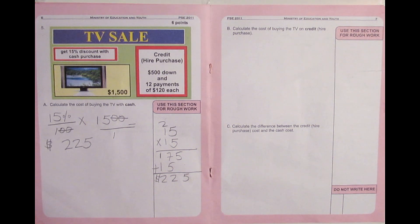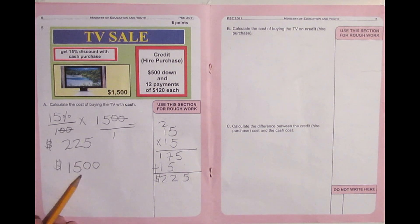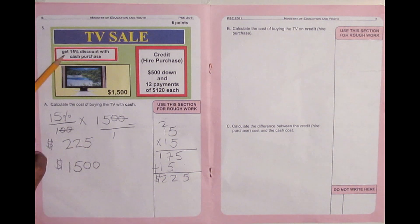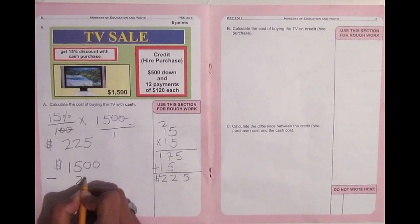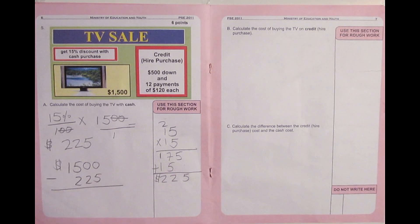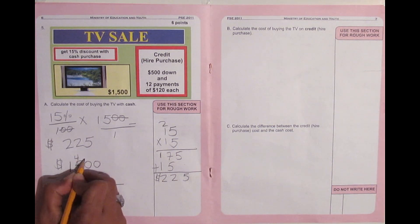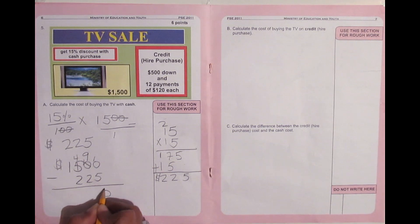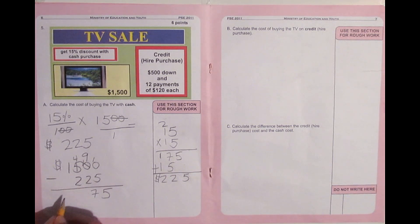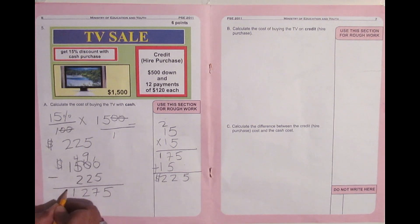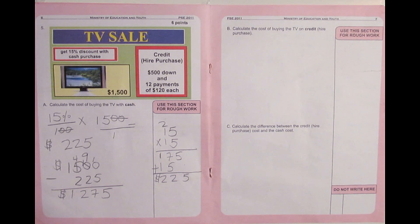The discount amount is 225 dollars. So 15 percent of one thousand five hundred dollars is 225 dollars — but that's just the discount. The cost of the TV is 1500, so I need to subtract that 225 dollars discount. When I minus that, it gives me the cash purchase price. We cannot minus zero from five, so we borrow: the five becomes four, this becomes ten; borrow again, the ten becomes nine and that becomes ten. Ten minus five is five, nine minus two is seven, four minus two is two, bring down the one.